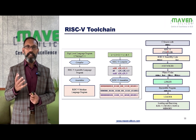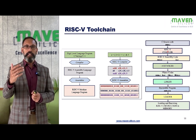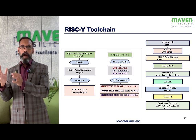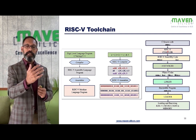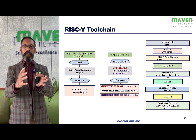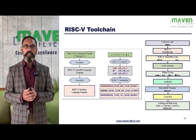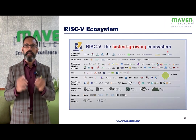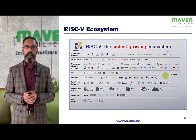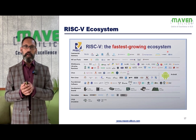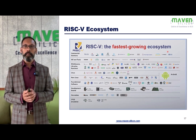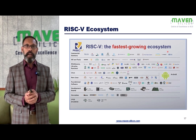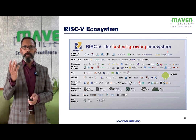For RISC-V programming, we train embedded engineers on the toolchain — covering application binary interface, supervisor binary interface, hypervisor binary interface, and how to deal with bare metal software coding or implementing operating systems. We make engineers familiar with all kinds of compilers and assemblers available for RISC-V and the RISC-V software ecosystem, including how RISC-V supports operating systems like Linux or Android, available development boards, simulators like Spike to simulate the ISA, and how to deal with emulation.